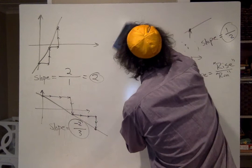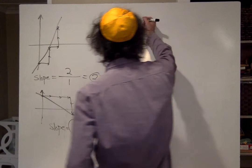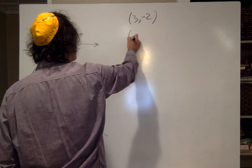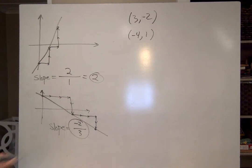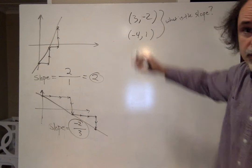So two points define a line. Let's say I have a line that's defined by the two points 3 comma negative 2, and the point negative 4 comma 1. These two make a line. I want to ask, what is the slope?